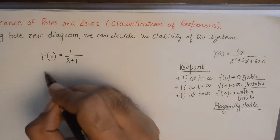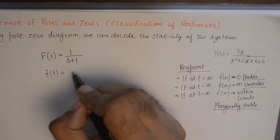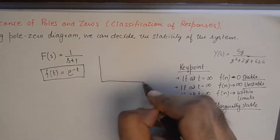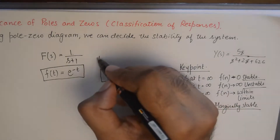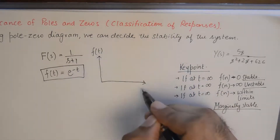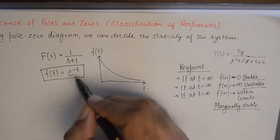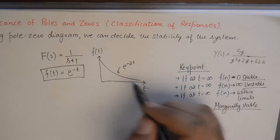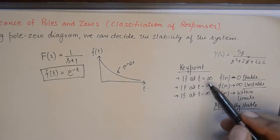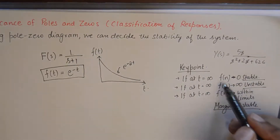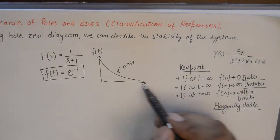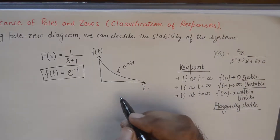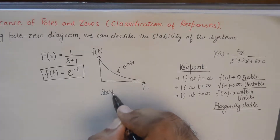If you take the inverse Laplace of this network function, you go back to the time domain and its time domain expression would be a decaying exponential. We know that e raised to the power minus t is a decaying exponential. When time is approaching infinity, the value of the function tends to become zero, so this kind of system is labeled as stable.